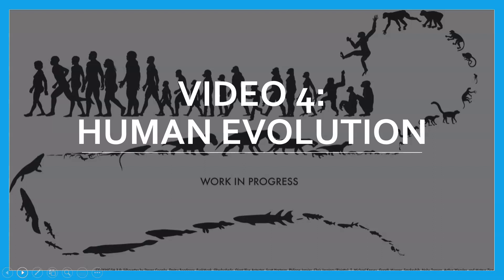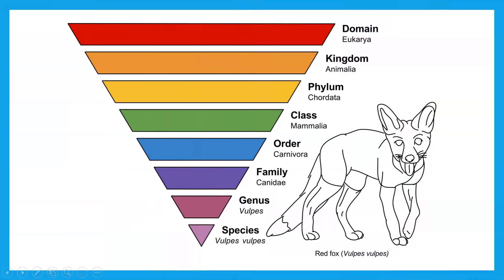Welcome to video four in our year 10 science unit where we are looking at human evolution. Before we can look at this, we just need to cast our minds back to year seven when we looked at the classification of species. Using the red fox as an example, I need you to be thinking about the levels: species, genus, family, order, class, phylum, kingdom, and domain — because when we start thinking about human evolution we need to start looking at other species within the same order as ourselves.